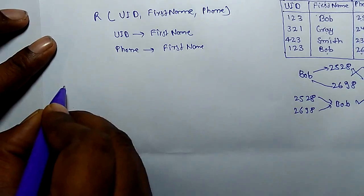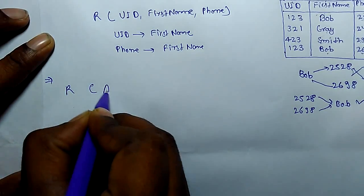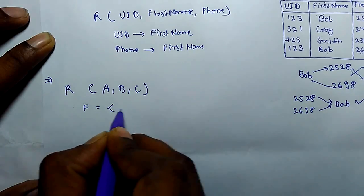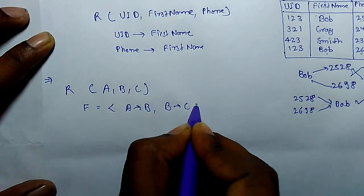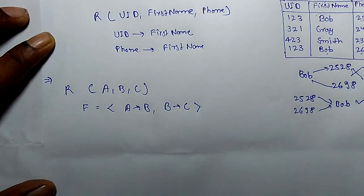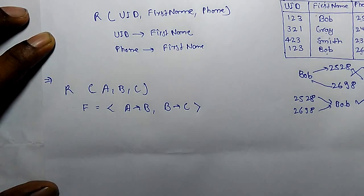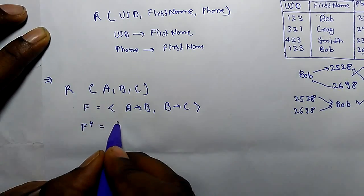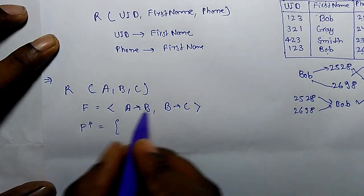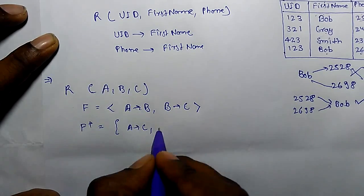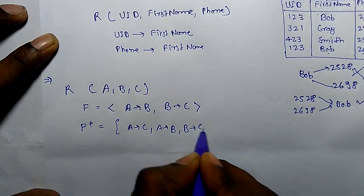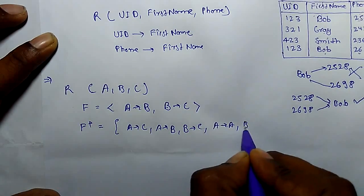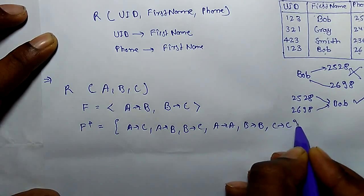Let's take another example. There is a relation which has attributes A, B, and C. The functional dependency of this relation is: A determines B and B determines C. This gives us the logical implies of functional dependency. If we have to find the F-closure — the set of logical implications — if A determines B and B determines C, it means A also determines C. Additionally, A determines itself, B determines itself, and C determines itself. This is F-closure.